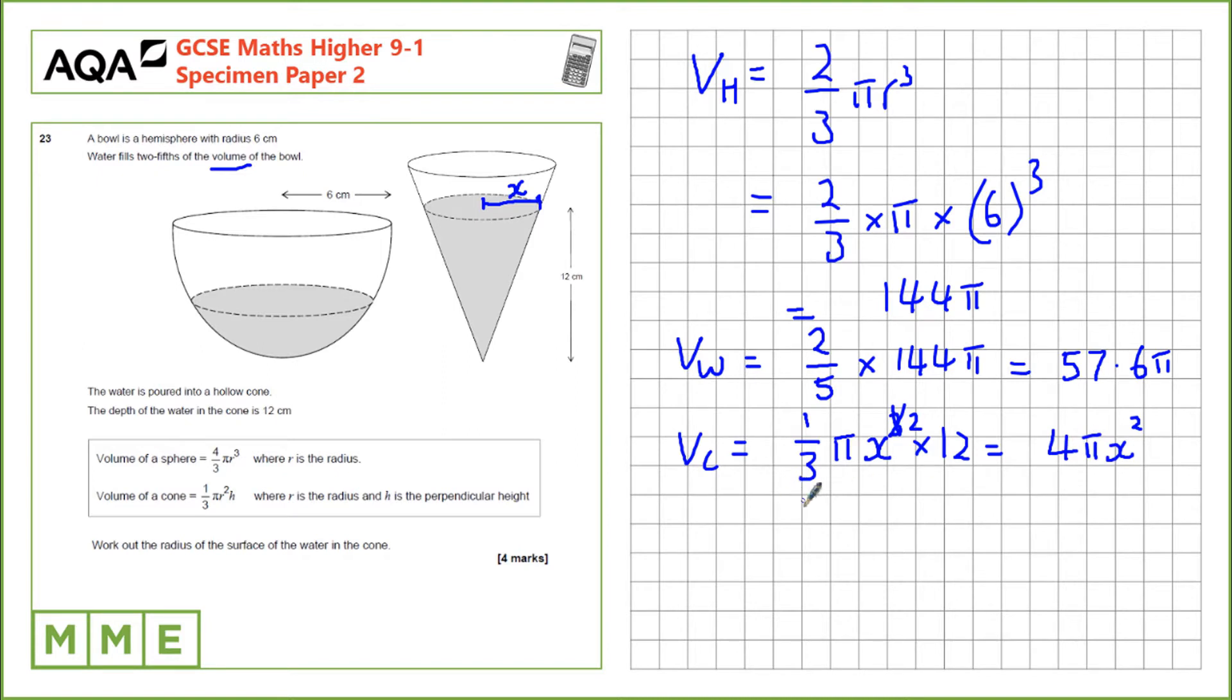Now we can equate these two. 4 pi x squared equals 57.6 pi. And the reason we can equate those is this volume of water is the same as this volume of water. We can cancel the two pis and divide by 4 to get x squared equals 57.6 over 4.